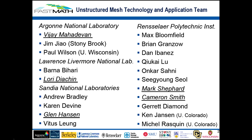The unstructured meshing technology development team associated with FASTMATH comes from a variety of organizations: Argonne National Labs, Lawrence Livermore, Sandia National Labs, RPI, as well as the University of Colorado. It's a fairly large team, and I'm not going to go into what each of the groups is doing in detail.